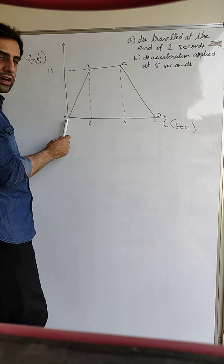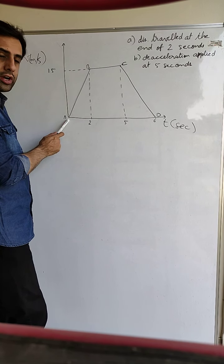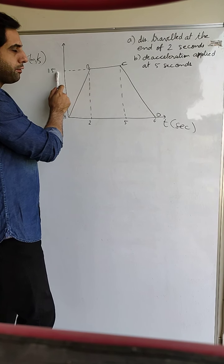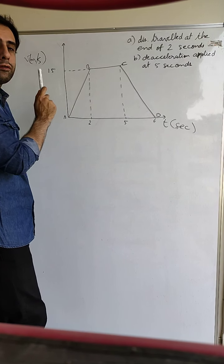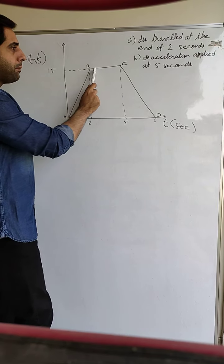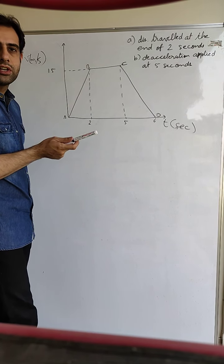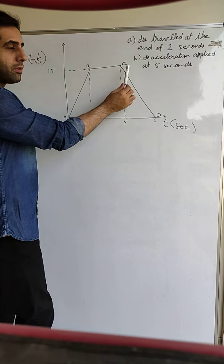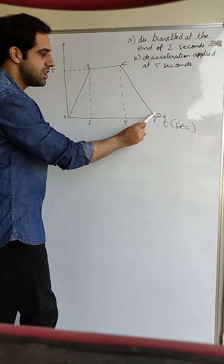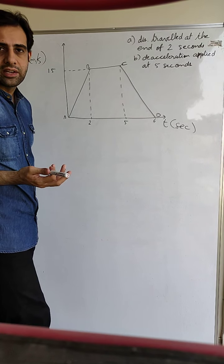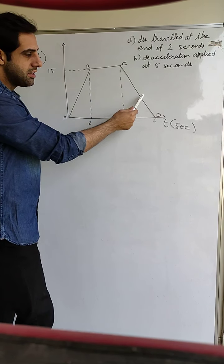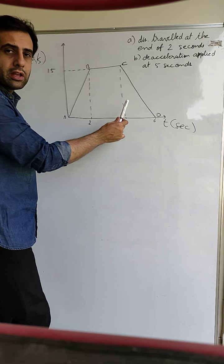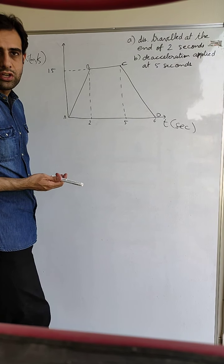The car starts at zero velocity from point A. It goes to point B at which it attains a velocity of 15 meters per second. From B to C the velocity is constant — both are 15 meters per second. Then at C the velocity is decreasing; maybe the brakes are applied. There is a decrease in velocity, and at six seconds at point D the body again comes to zero velocity.